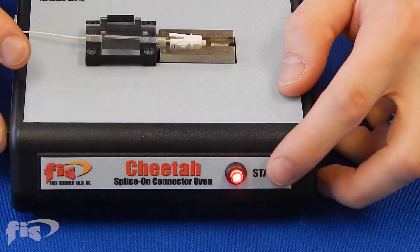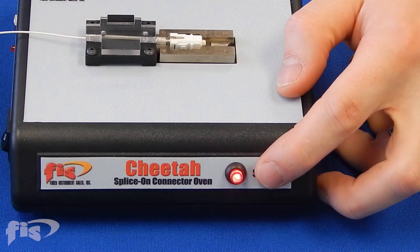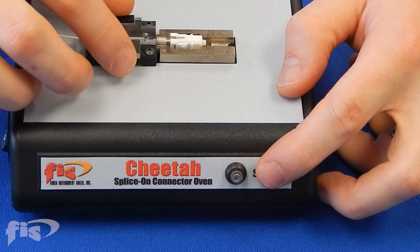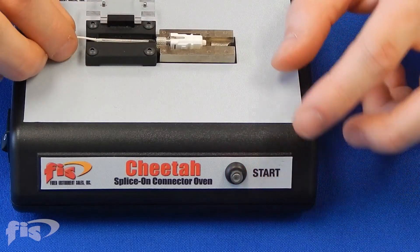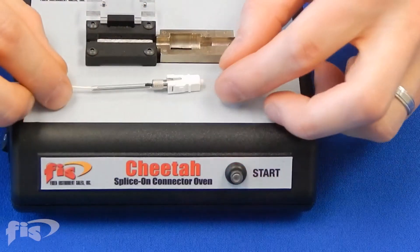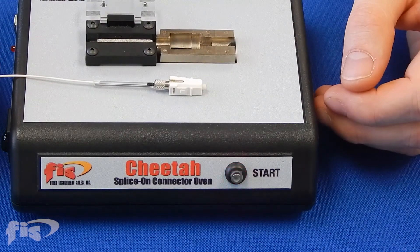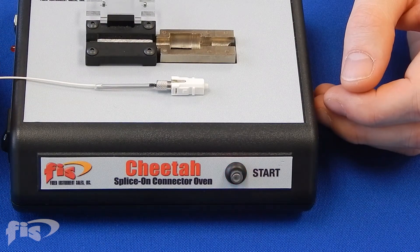When the light begins to blink faster, the cooling cycle has started. If additional heating time is needed, you can press the start button again to initiate a reheat cycle of 15 seconds. Once the sleeve is shrunk, remove the connector and allow the splice to cool.